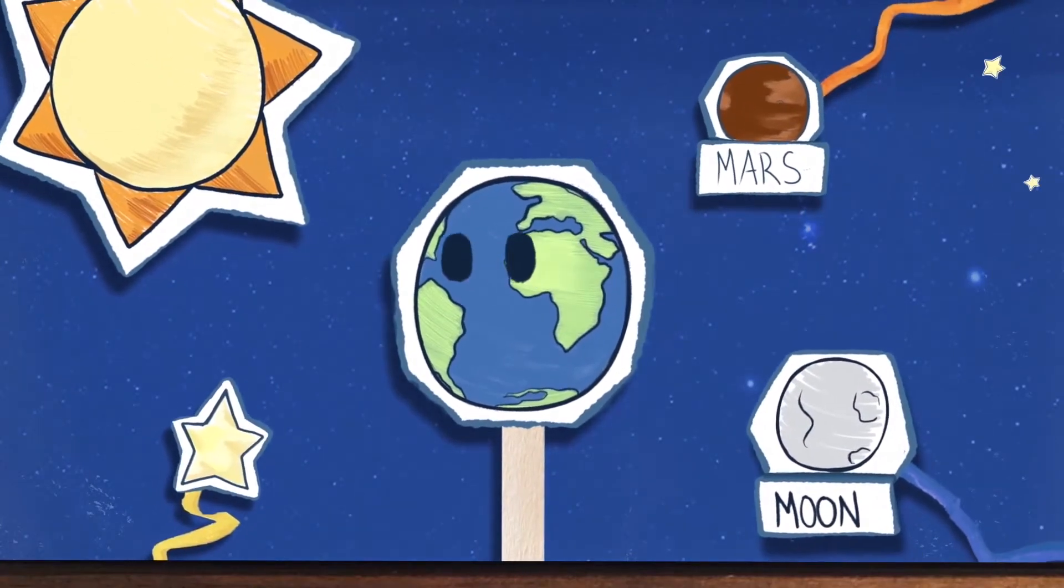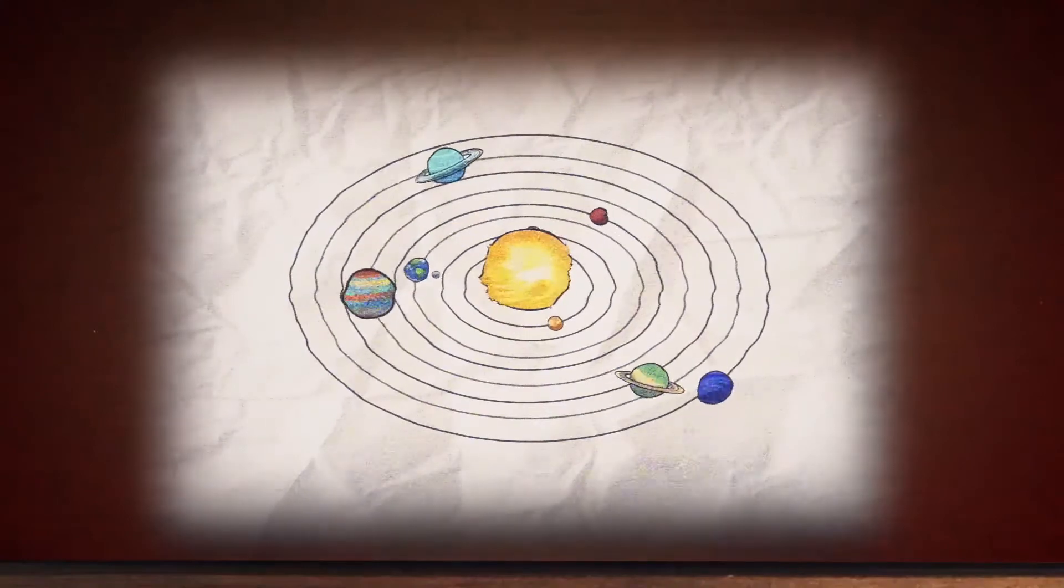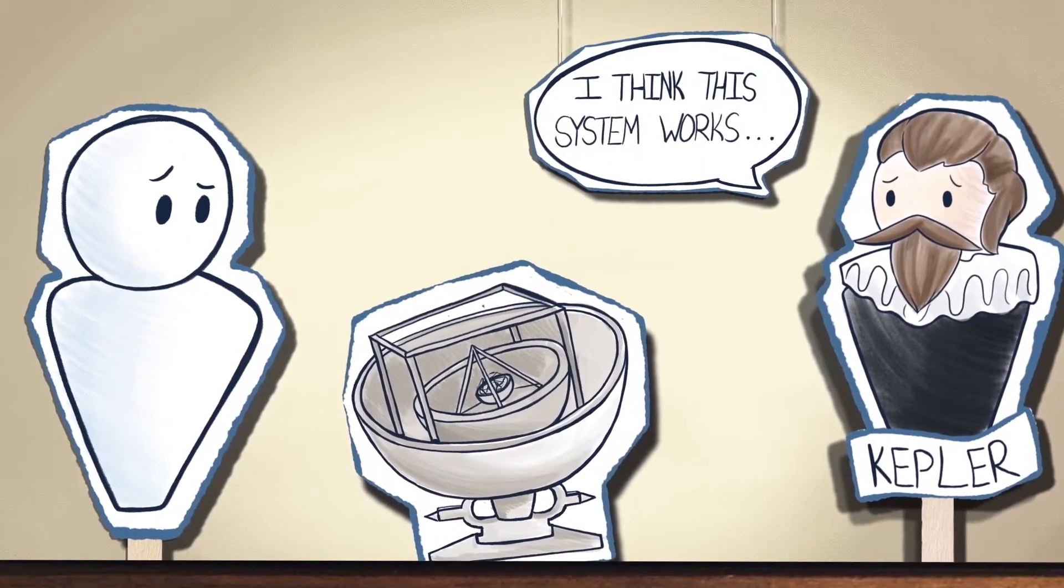If you haven't seen our latest video, now is a great time to go watch it. It tells the story of Copernicus and Galileo and Kepler and these early scientists and their discovery that the sun is at the center of our solar system, a concept called heliocentrism.